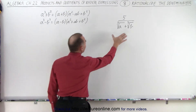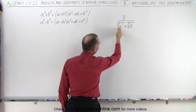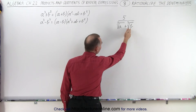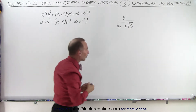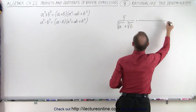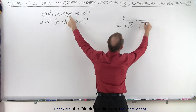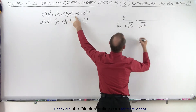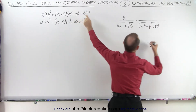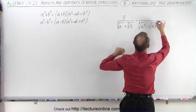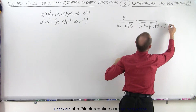So essentially, if we take this and we want to write it as a plus b — which is the cube of the cube root of a plus the cube of the cube root of b — then all we have to do is multiply by the conjugate expression: the cube root of a squared minus the cube root of a times the cube root of b, plus the cube root of b squared.